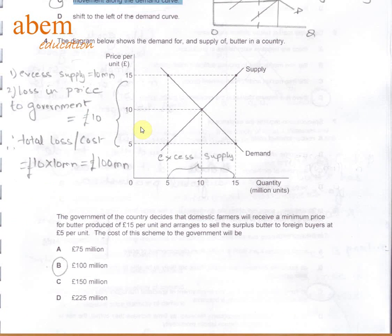In question number four, the government has put the minimum price at 15 pounds and is selling to the foreign country for 5 pounds. So the government is taking a loss or bearing the cost of 10 pounds, and there is an excess supply of 10 million units. To work out the total loss: 10 pounds times 10 million will give us 100 million. The answer is B.